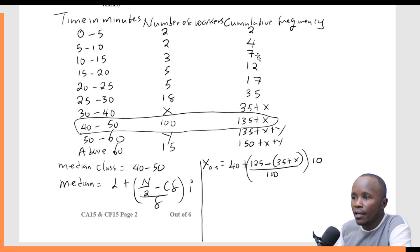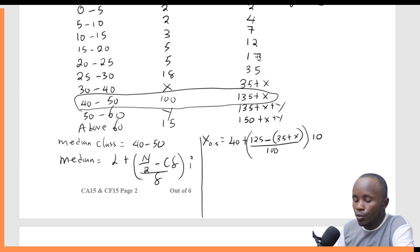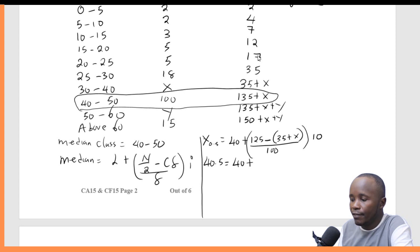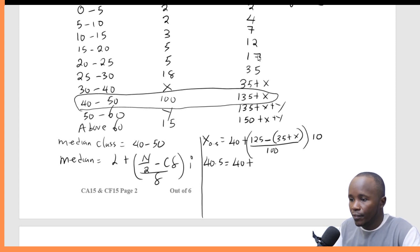You have already been given the median, which is 40.5. You can see from the equation that we are looking for X given that the median is 40.5. So at this point I will have: 40.5 is equal to 40 plus — let me simplify — what is 125 minus 35? With my calculator, 125 minus 35 gives me 90. So this is 90 minus X, over 100, then multiply by 10.